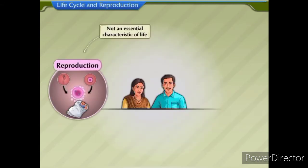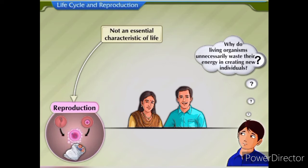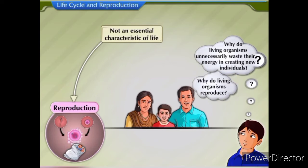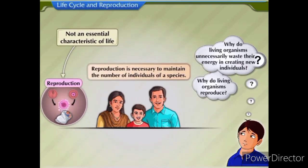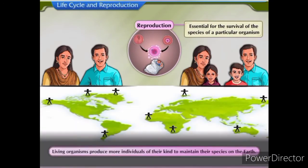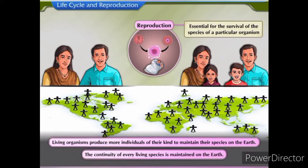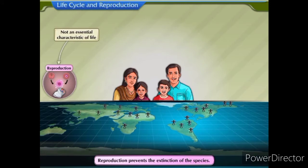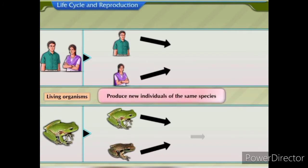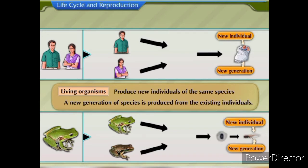If reproduction is not an essential characteristic of life like respiration and nutrition, then why do living organisms unnecessarily waste their energy in creating new individuals? Why do they reproduce? Reproduction is necessary to maintain the number of individuals of a species. Living organisms produce more individuals of their kind to maintain their species on the earth, thereby preventing the extinction of the species. This fundamental characteristic of living things is known as reproduction.